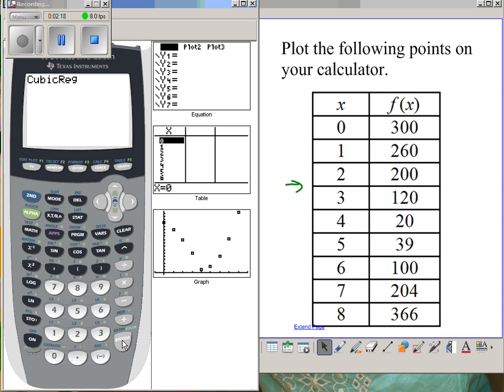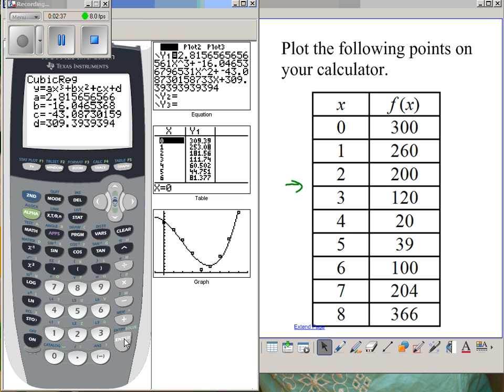I want to tell it where to pull my data from, which is list one and list two. And then the awesome feature of this calculator is you can throw this into your y-equals by hitting the variables button, going over to y-variables. I can tell it where to put it. I want to put that equation when I get it in y1.